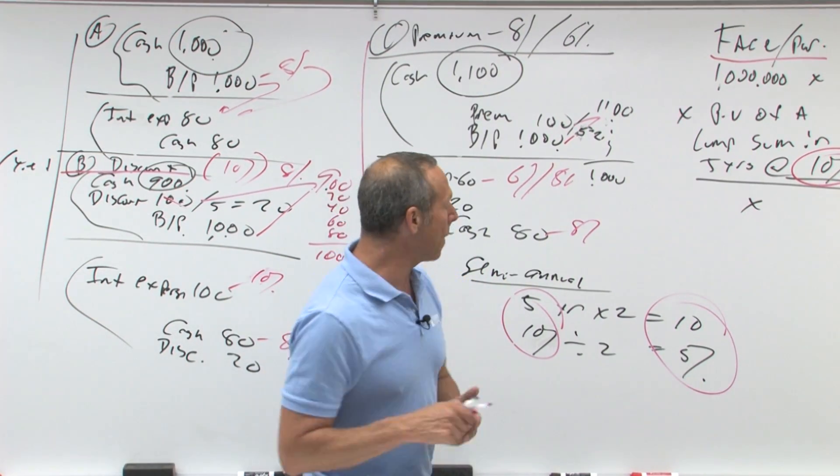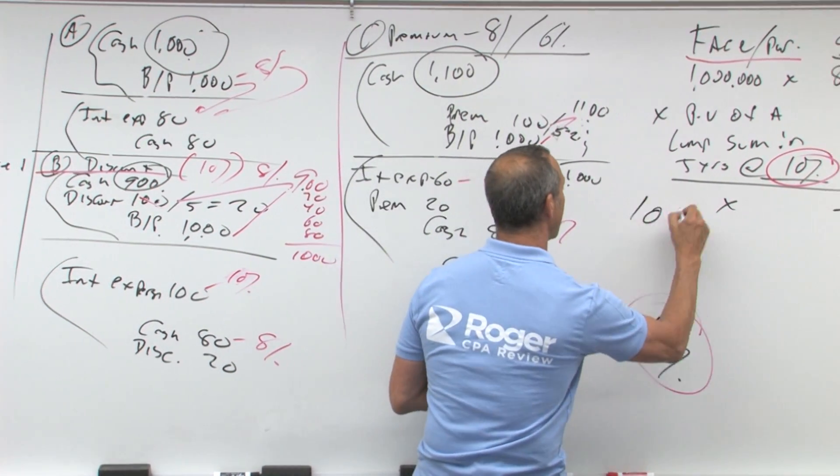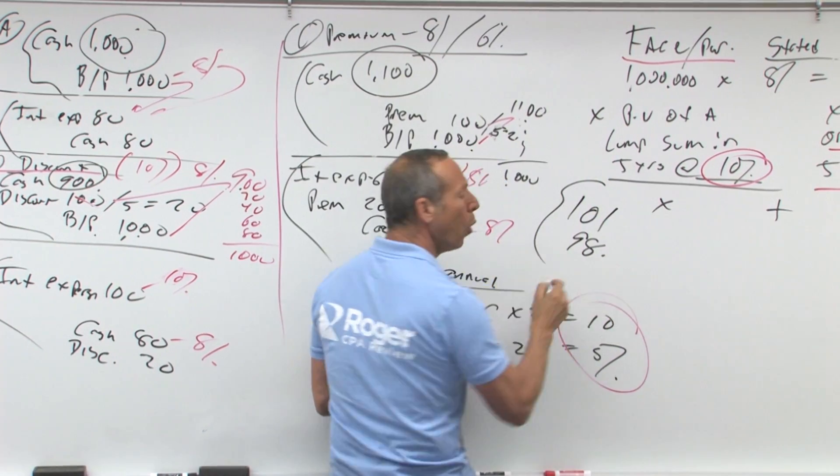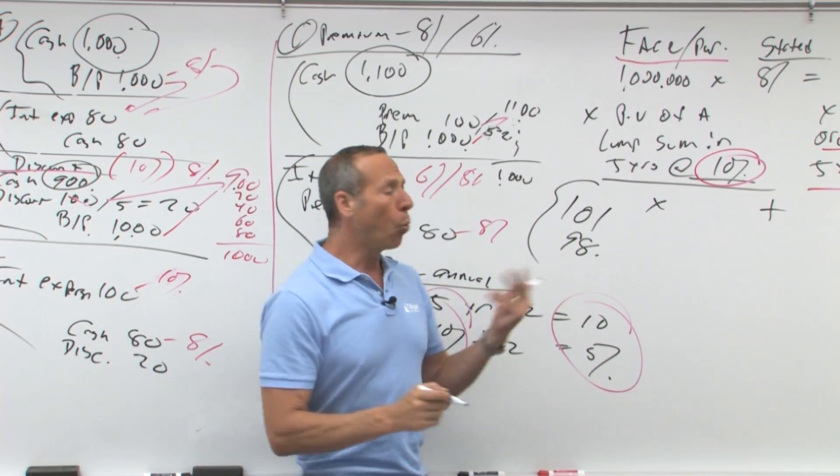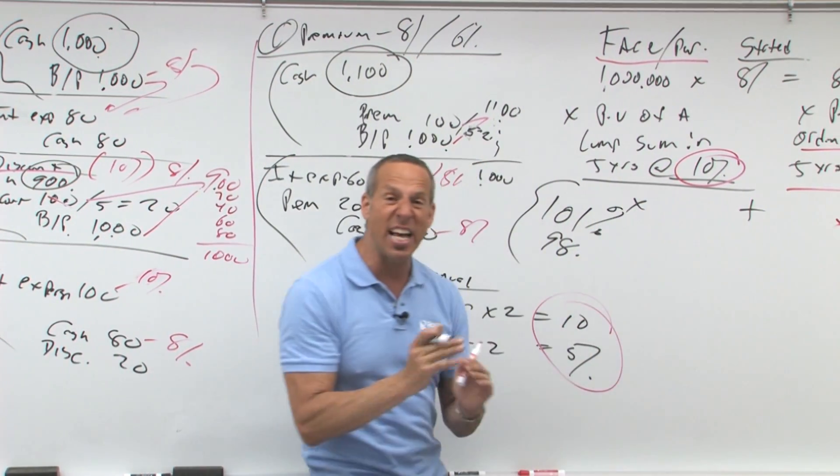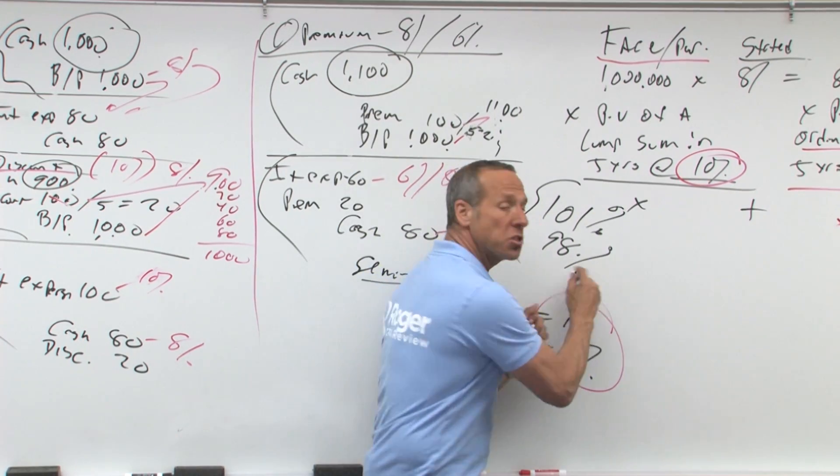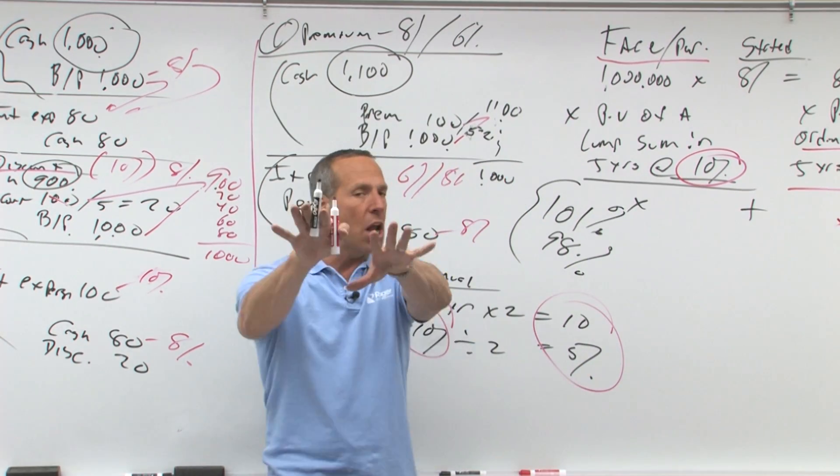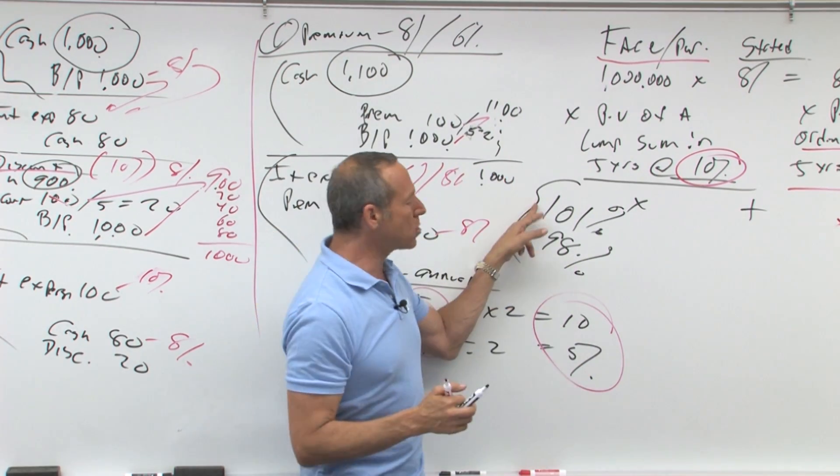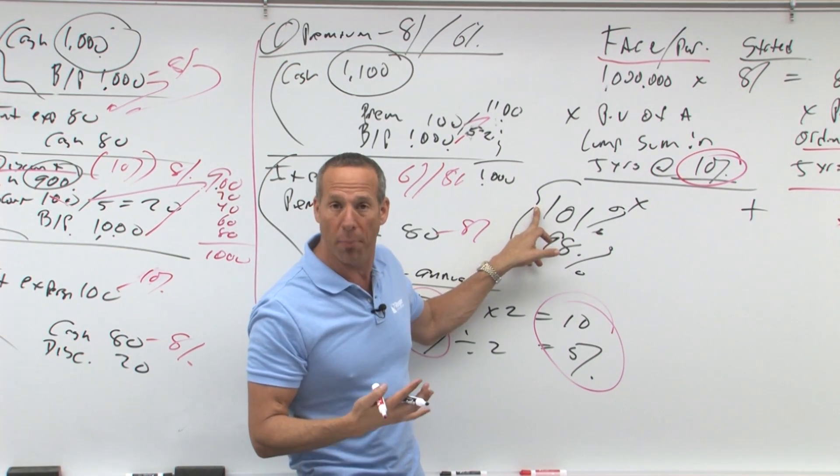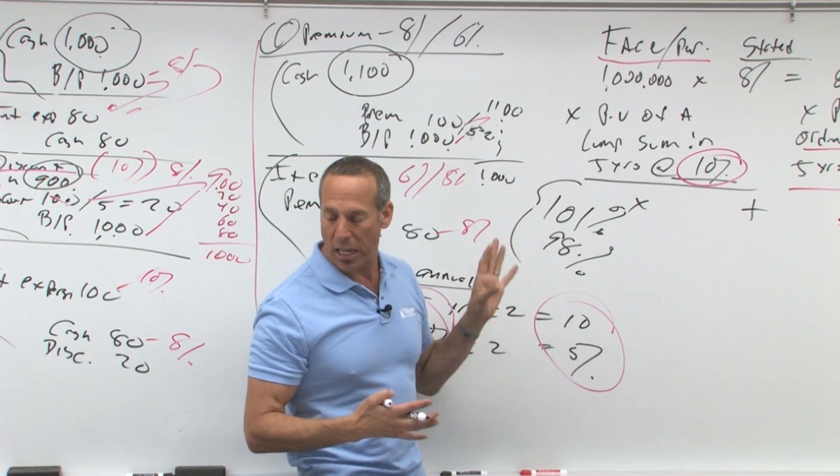Sometimes, they'll just say in the exam that the bonds were issued at 101 or 98. What does 101 or 98 mean? 101 means 101% of face or 98% of face. Generally, but not always, this would be a premium, because you got more money. This would be a discount, because you got less.